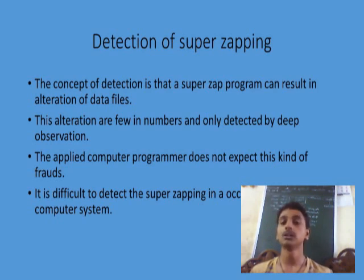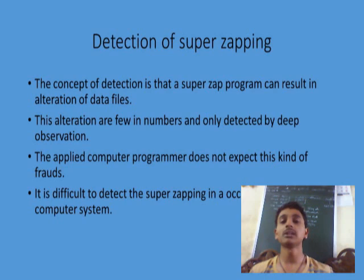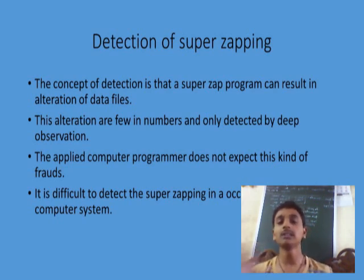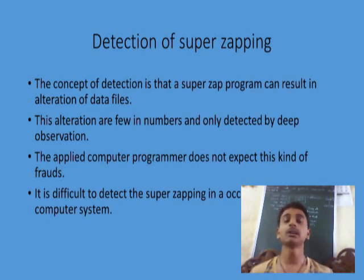Applied computer programs do not expect this kind of fraud, making it difficult to detect super zapping. In an occasionally used computer system, the data is not memorable to the system administrator's brain. So if small changes occur in such a system, the system administrator would not notice them.